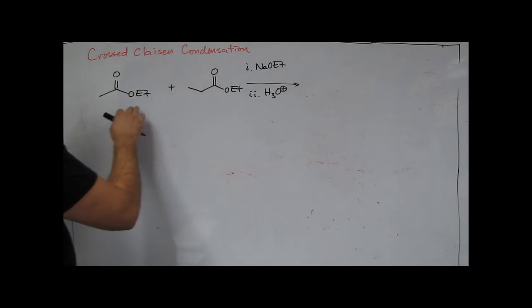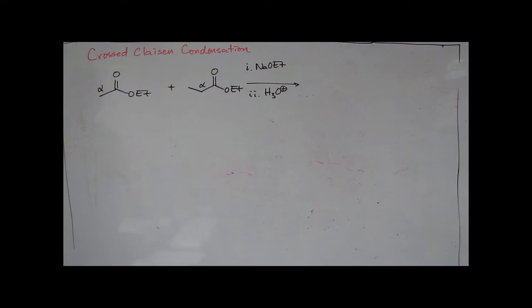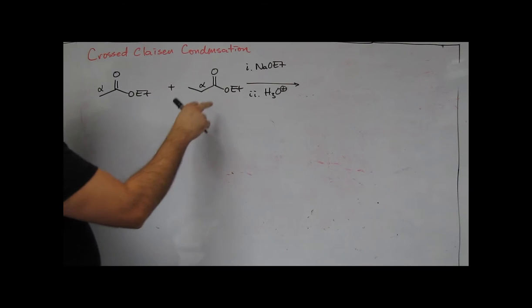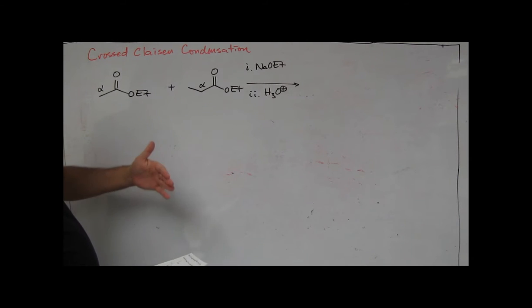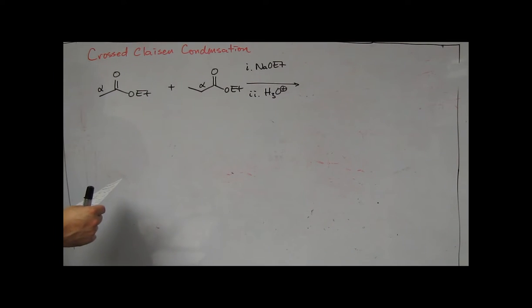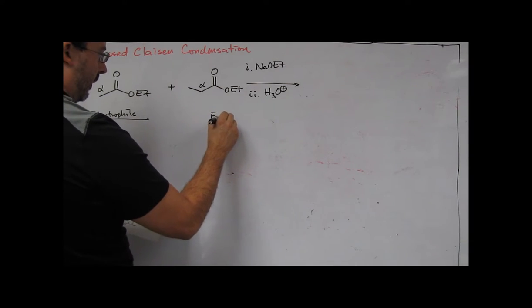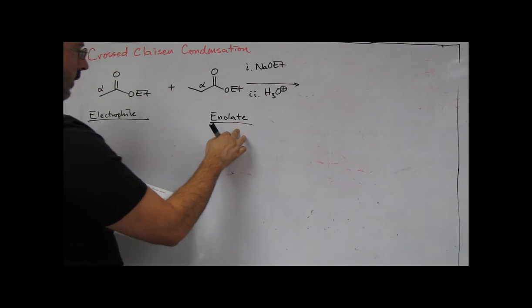So in either of these esters they both have a single alpha carbon. This ester happens to have three hydrogens on the alpha, this has two. We saw in the prior example that we form an enolate. The enolate then attacks the electrophile, which is the starting ester. So let's go ahead and identify the enolate-electrophile pairs, and that will help us determine the products that we're forming. So for example, we'll start a table here. We'll call this electrophile. Then the coupling partner is the enolate, so that's the nucleophile.